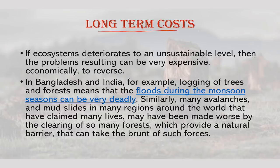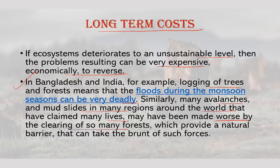If ecosystems deteriorate to an unsustainable level, then the problems resulting can be very expensive economically to reverse. In Bangladesh and India, logging of trees and forests means that floods during the monsoon seasons can be very deadly. Similarly, many avalanches and mudslides around the world may have been made worse by the clearing of forests, which provide a natural barrier. Vanishing coral reefs, forests and other ecosystems can make the effects of some natural events even worse.